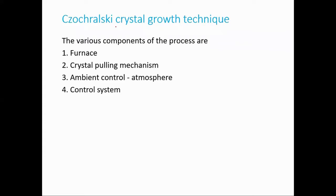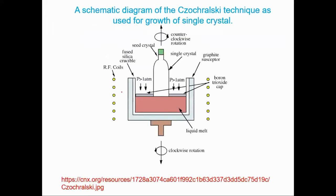In the Czochralski crystal growth technique, various components are involved: a furnace to melt the amorphous silicon, a crystal pulling mechanism to pull the growing crystal upward, an ambient control system to maintain the proper atmospheric composition so that air does not react with the molten silicon, and a control system to manage the process inside the chamber. This is the basic apparatus and schematic diagram for the Czochralski technique.